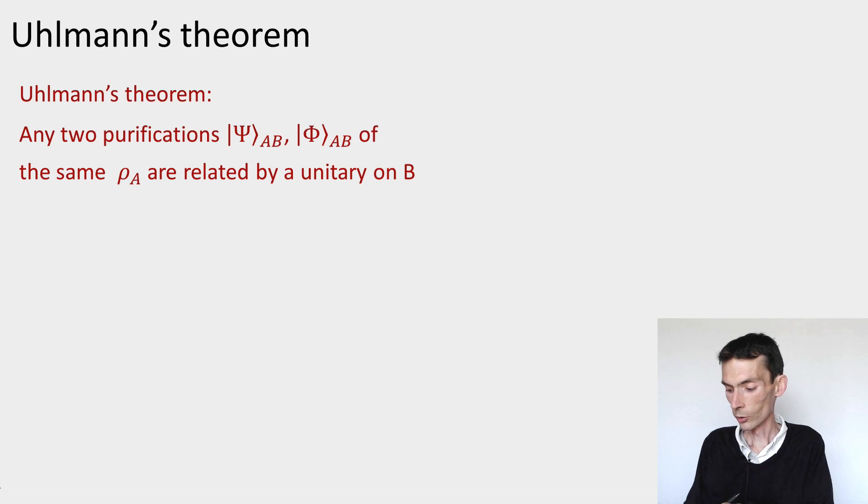So here is a statement of the theorem. Uhlmann's theorem says that any two purifications, |ψ⟩ and |φ⟩, of the same ρ_A are related by a unitary on the B system. Now let's immediately see why this answers the question that I raised at the start of the module.